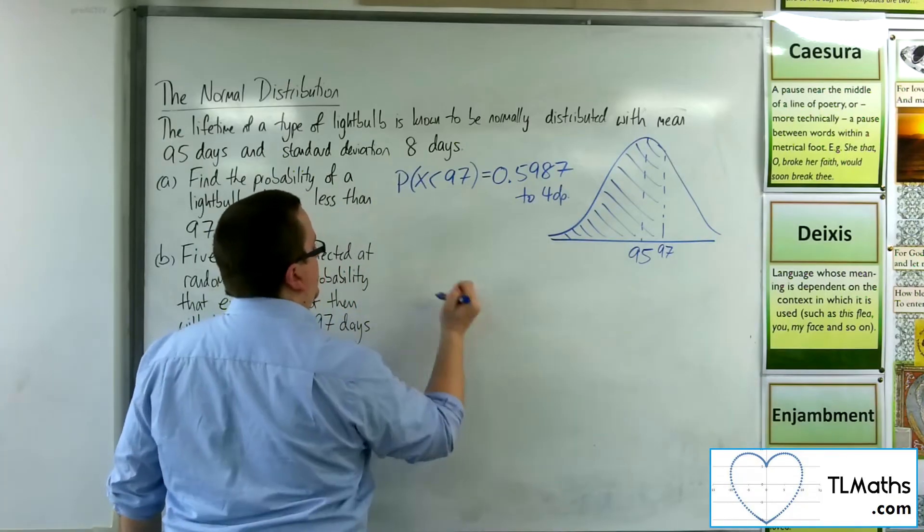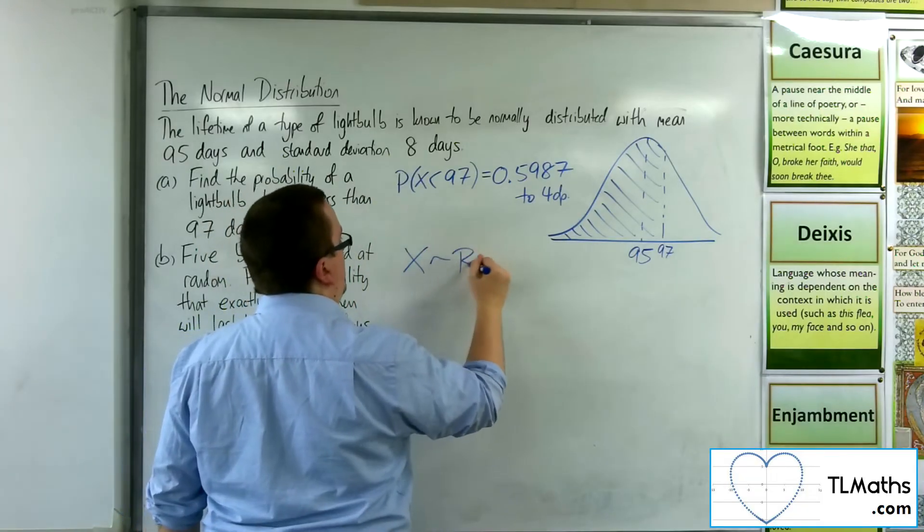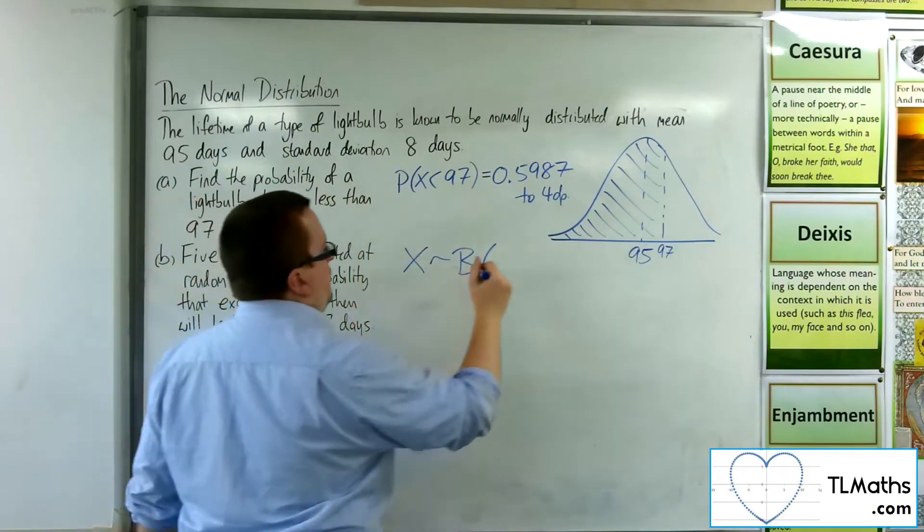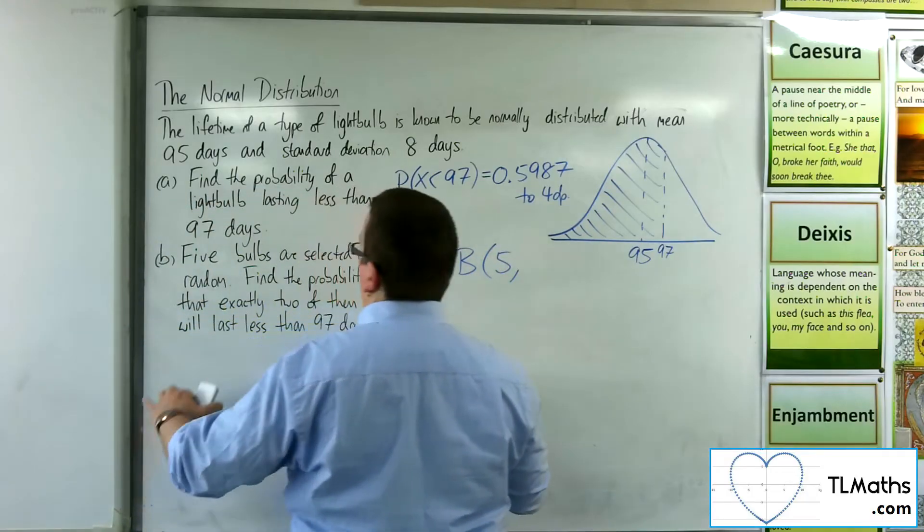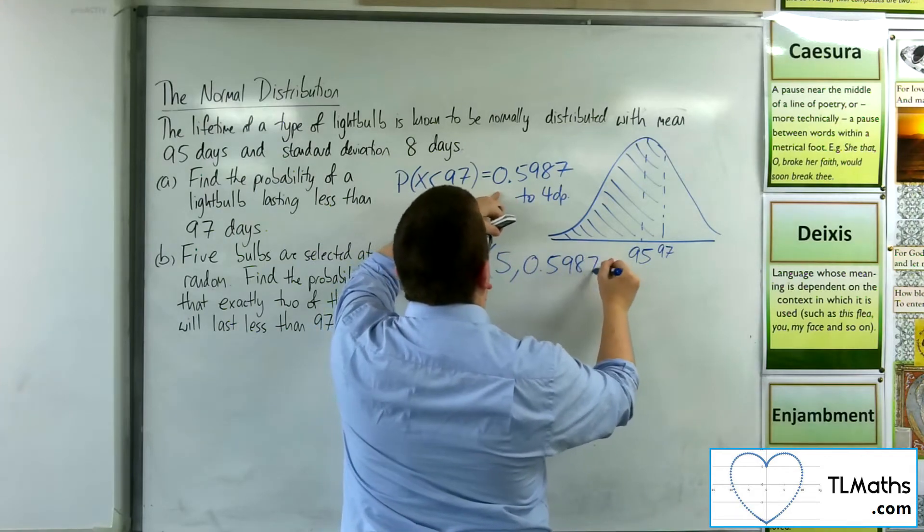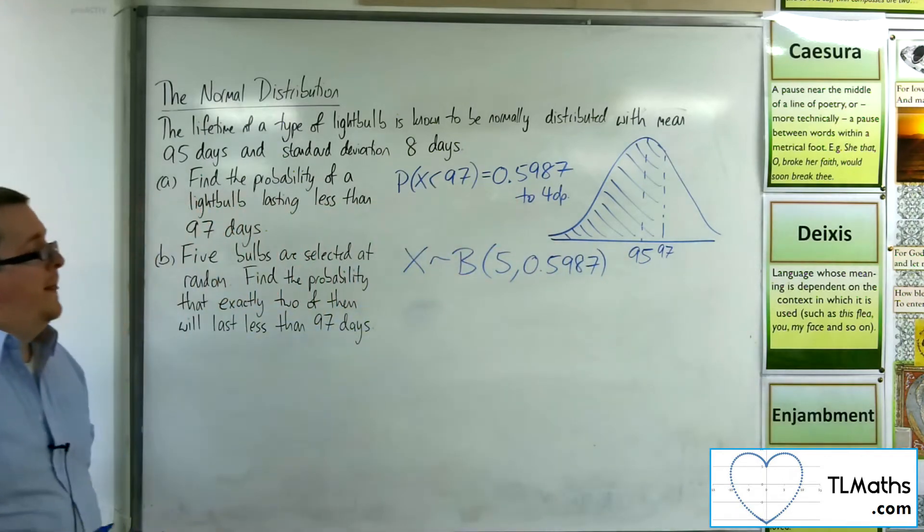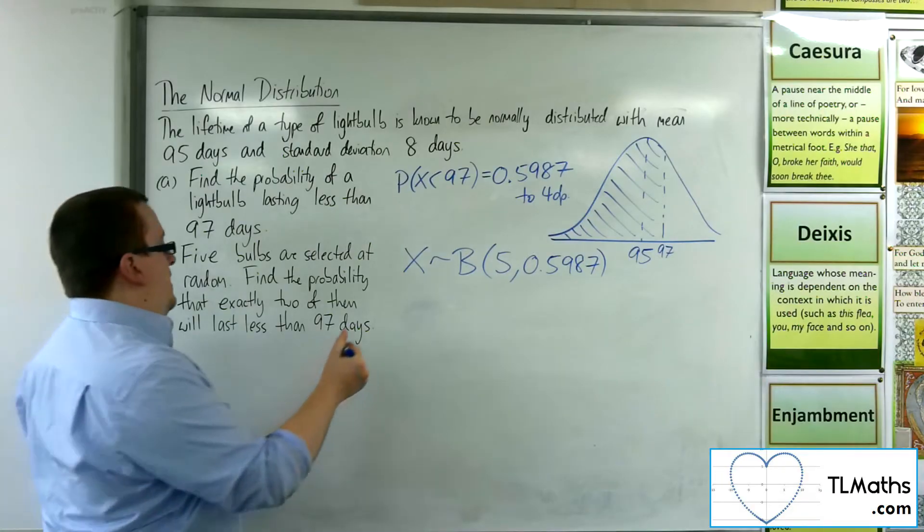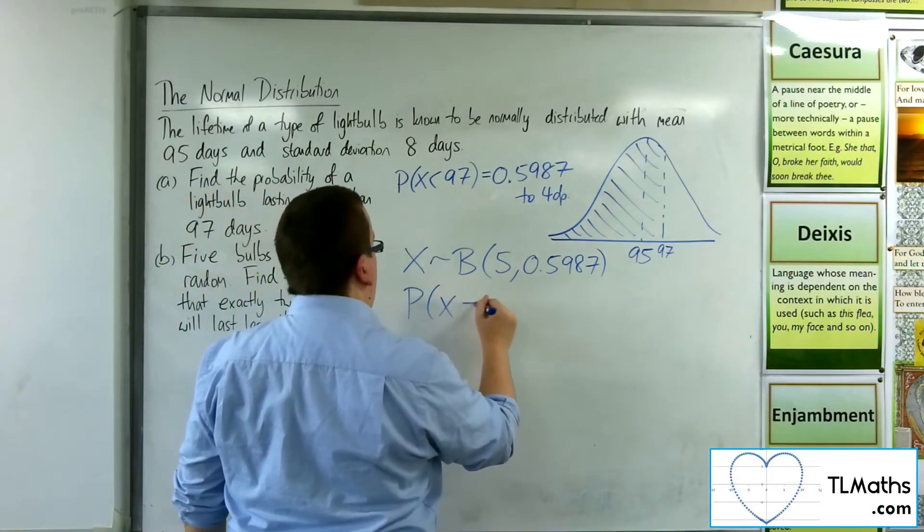So if I write it down as X being binomially distributed with five trials and a probability of, well, we found it here, the 0.5987. We're using our previous result. And I want to find the probability of exactly two.